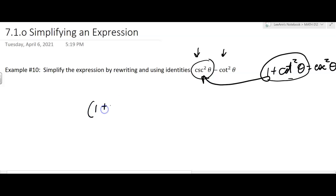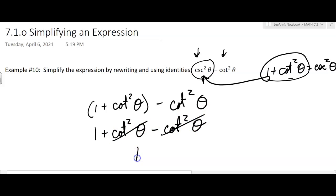So you're going to have 1 plus cotangent squared theta minus cotangent squared theta. But you don't need the parentheses. And then the cotangent squared theta's cancel, so you just get 1.